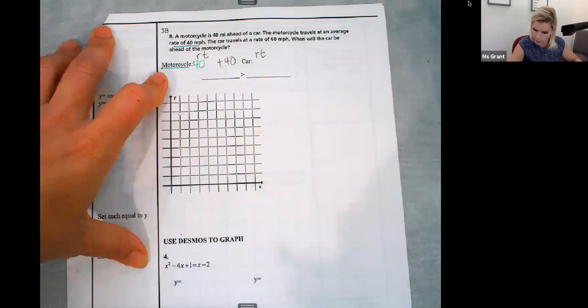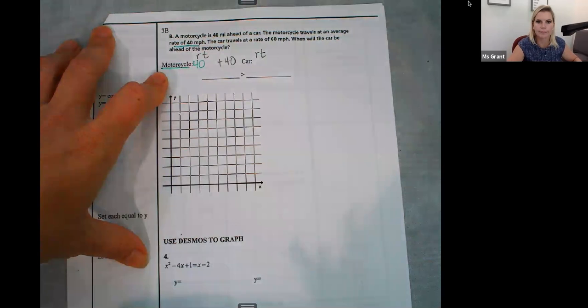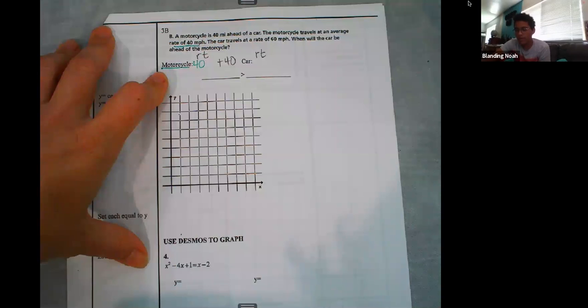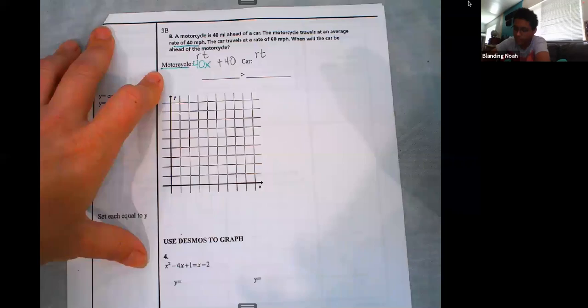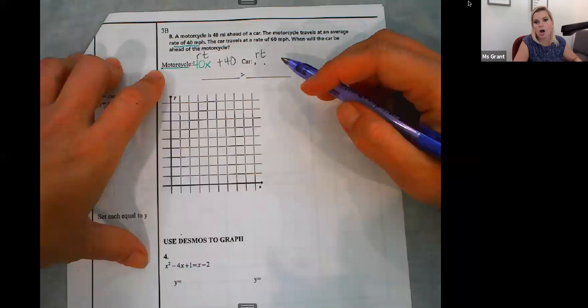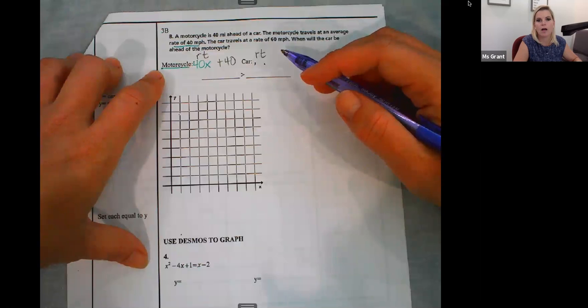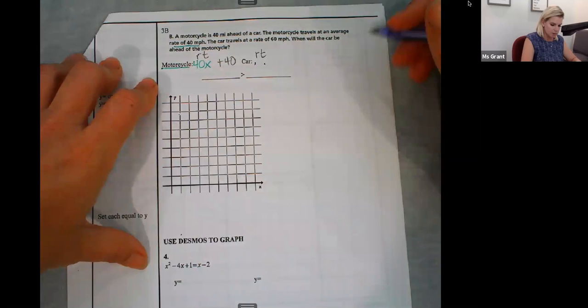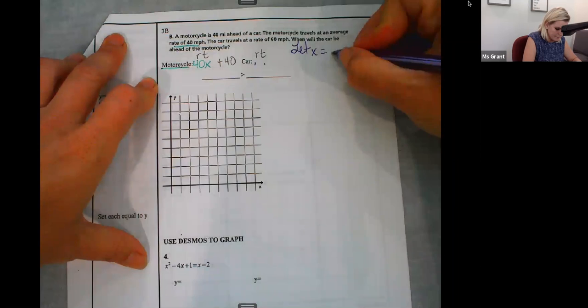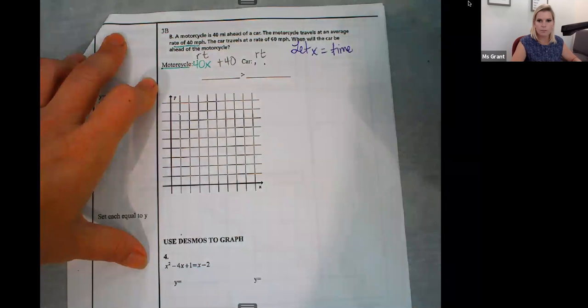So the motorcycle is going this fast, rate of 40 miles per hour. Do I know how long the motorcycle, Noah, do I know how long the motorcycle was riding? If he's 40 miles out of the car, he's probably been riding for an hour, something like that. But I'm still not like perfectly 100% sure, so I'm going to keep that as my unknown. 40x plus 40. Now what's the rate times time of my car? How fast was the car going? And what do I use for time? How long? So this might help you out. Let my x equal the time because I don't know how long each of them go.